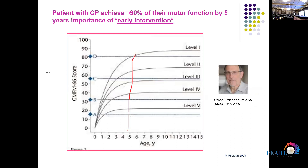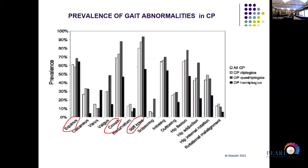For children with cerebral palsy, I think we are all familiar with this famous graph — the work done by Professor Peter and his team in longitudinal studies of motor function in children with cerebral palsy. He concluded that across all GMFCS levels, the majority of children with cerebral palsy achieve their motor potential by five years of age, after which they plateau. Levels one to three plateau later; levels four and five plateau much earlier, around age two to two and a half.